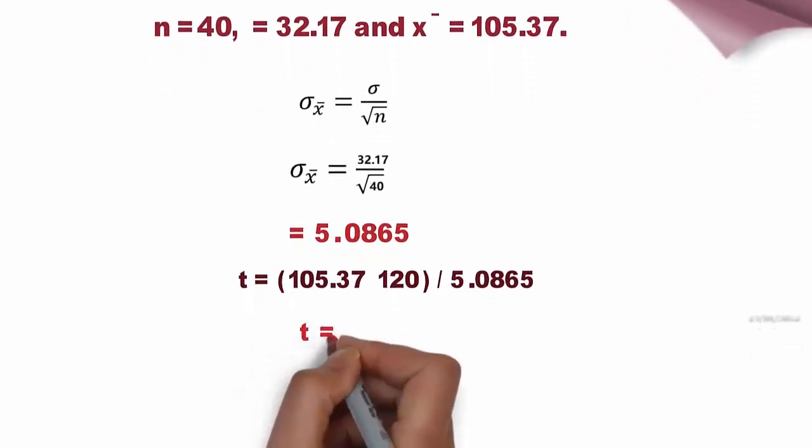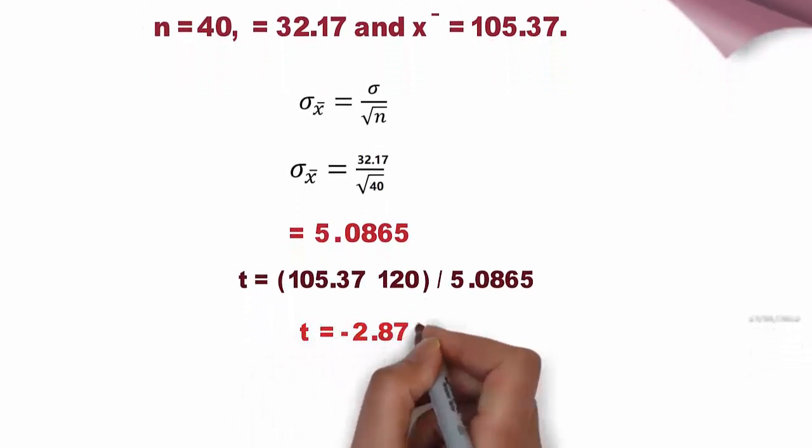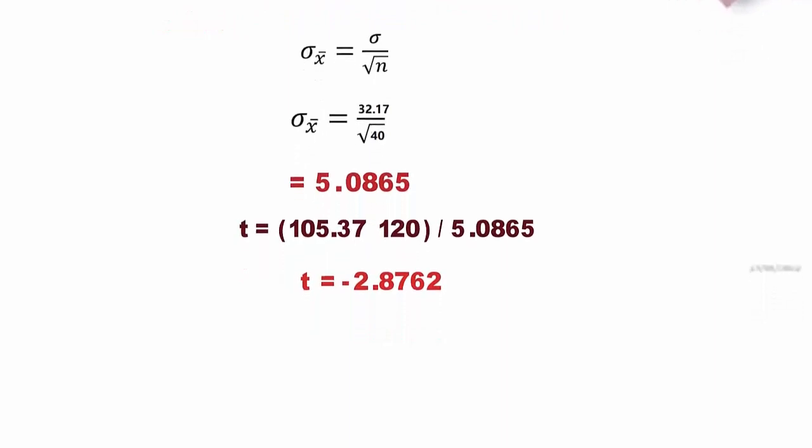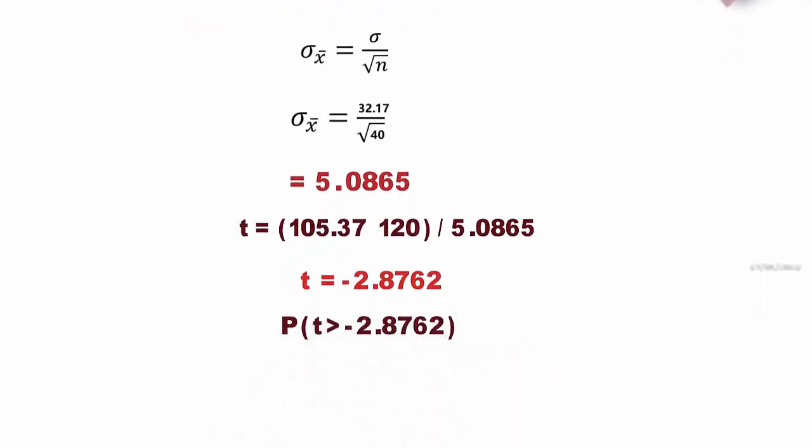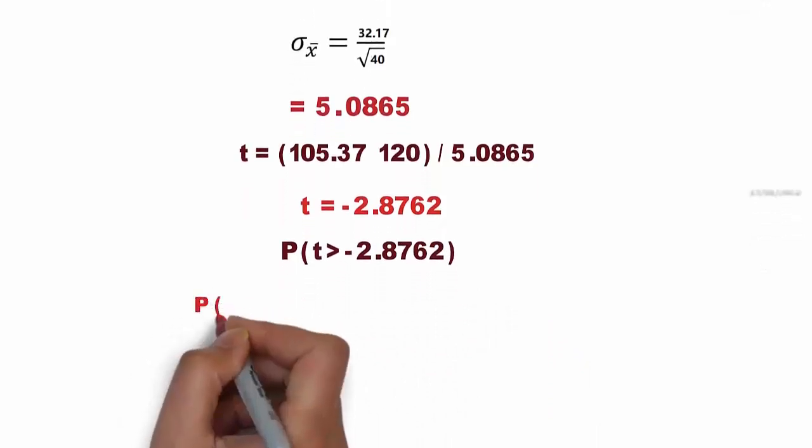Using the Z-score table, we can find the value of P(t greater than minus 2.8762). From the table, we get: